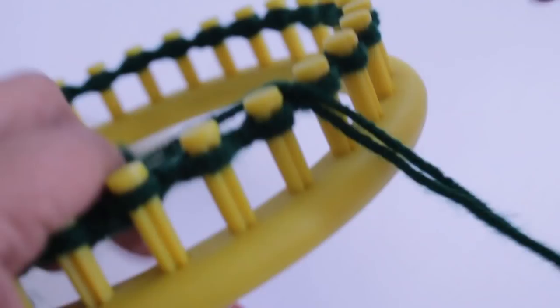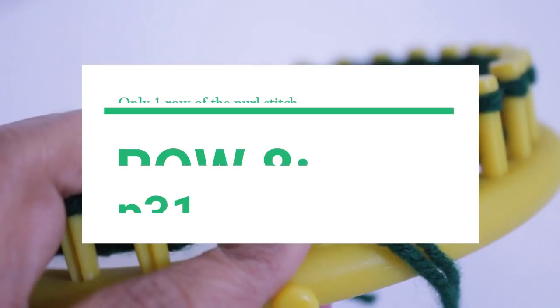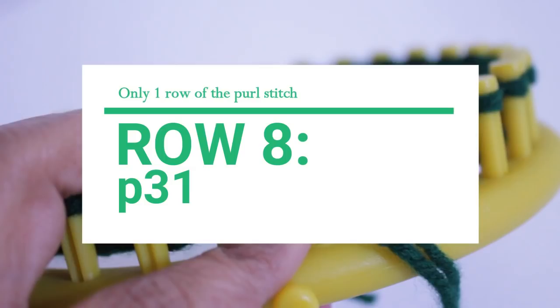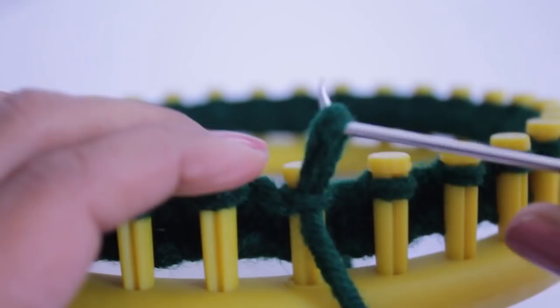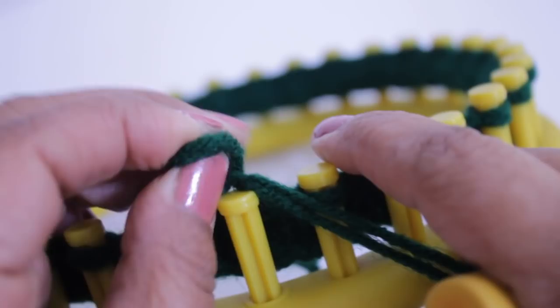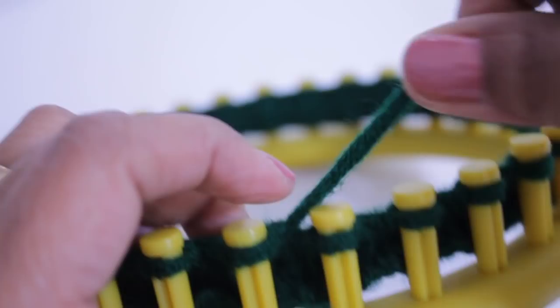Once you're done with those seven rows, you're ready for row eight, which is just a row of the purl stitch. You're gonna take your working yarn and put it under the existing loop. You're gonna take your hook and from the top, scoop up the working yarn and create a new loop. You're gonna take the old one off the peg, place the new one on the peg and pull your working yarn to tighten that stitch.